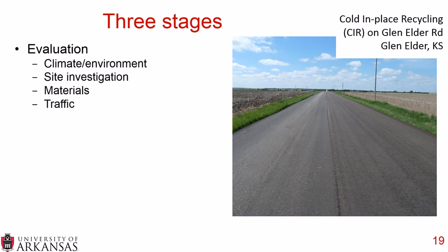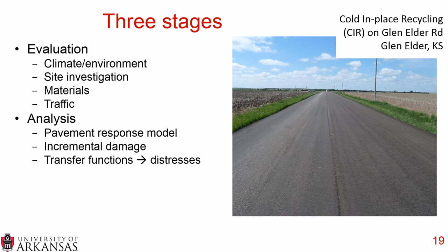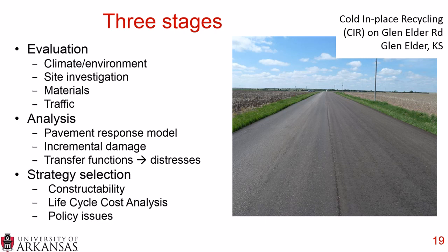There are three stages to the AASHTOWARE software. First, you do an evaluation of the climate, environment, existing site, materials, and traffic. You then perform your analysis — the pavement response model generates incremental damage because on a daily and hourly basis the climate, environment, and traffic place loads onto the pavement structure, and over time very small amounts of damage build up to major distresses. Those distresses are mapped into a transfer function that measures anticipated distresses. Finally, you select which materials and pavement structures to use, considering constructability, lifecycle cost analysis, and any policy issues.